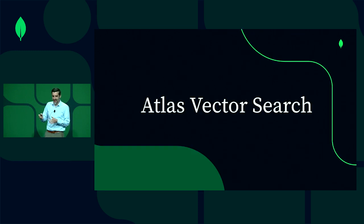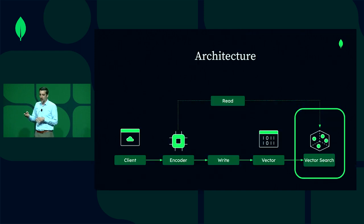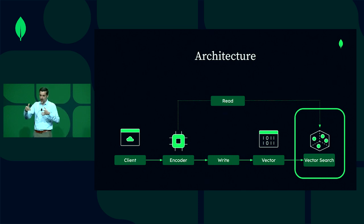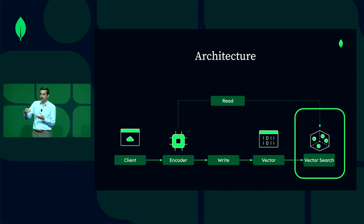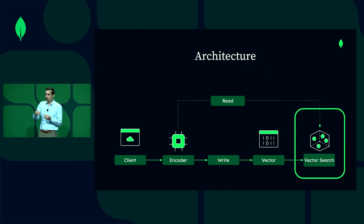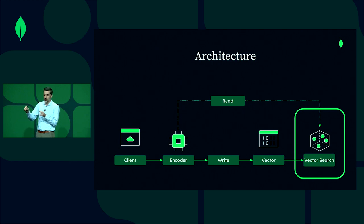This is what leads us to today where vector search becomes an extremely powerful capability because you're able to represent so much semantic data inside of these high-dimensional vectors. Moving on to vector search as a capability: the way this works is you and your client — the application — would send your data through an encoder and then write that vector along with your data into vector search. You keep your vectors with your data and write them into the database. On the read side, you encode your query and submit that in a dollar search stage along with your target vector to find neighbors. It's really that simple.